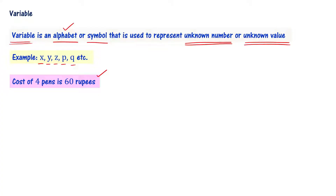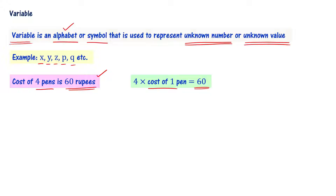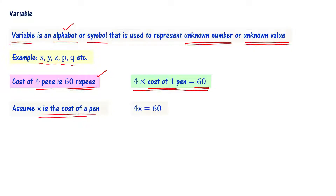We have a statement that the cost of 4 pens is 60 rupees. This statement is a mathematical expression. What do we do? 4 times the cost of 1 pen is equal to 60. If I assume that x is the cost of 1 pen, then the mathematical equation is 4x is equal to 60. This x is a variable.